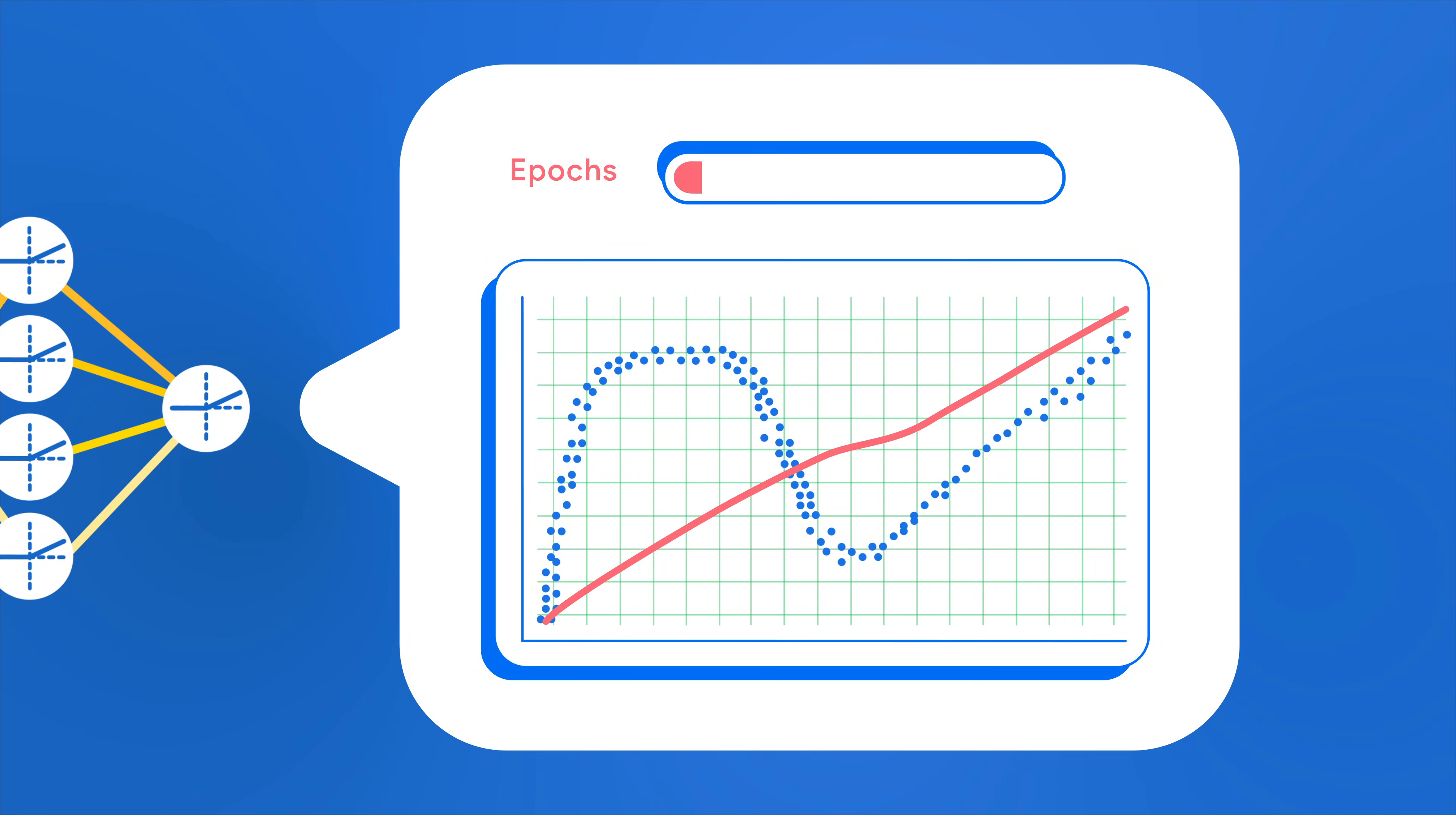With enough layers, nodes, and activations in our neural network, we can approximate any function, including feature crosses.